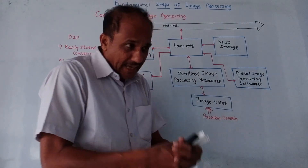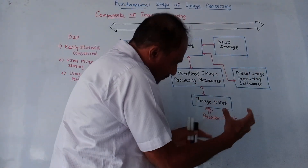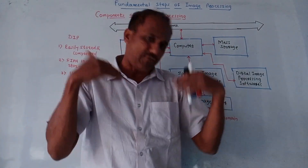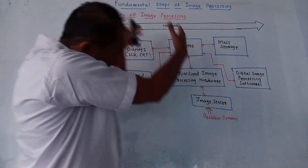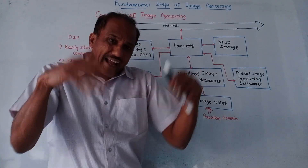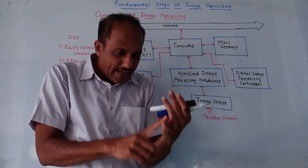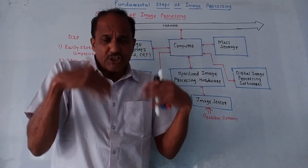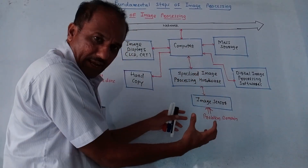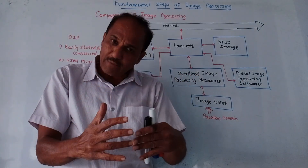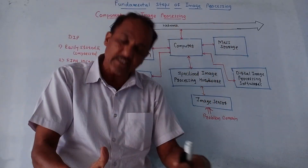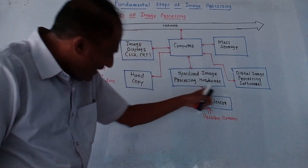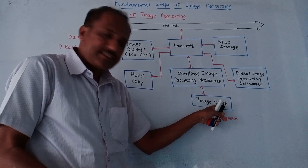The problem domain refers to the object we want to capture. The first block is the image sensor. For example, your eyes are capturing this image, so eyes are acting as an image sensor. In image processing, we generally use CCD cameras to capture an image — to collect the light reflected from the object we want to visualize. That is the major function of the image sensor.